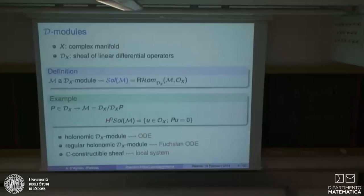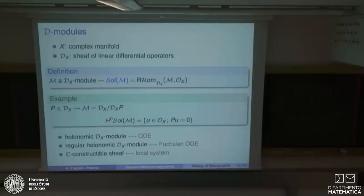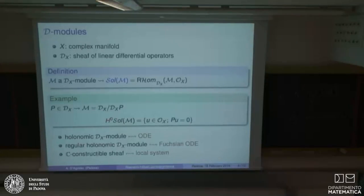We were speaking about Fuchsian ODEs, and there is a general notion of regular holonomic D-module. We spoke about local systems — local systems are not enough; you need also data attached to the singular point. The correct generalization in higher dimension is the notion of a constructible sheaf, meaning you can find an analytic stratification of your manifold such that the cohomology of the sheaf complex is locally constant on the strata. There are also some very nice constructible sheaves called perverse sheaves. They form an abelian category and a stack.